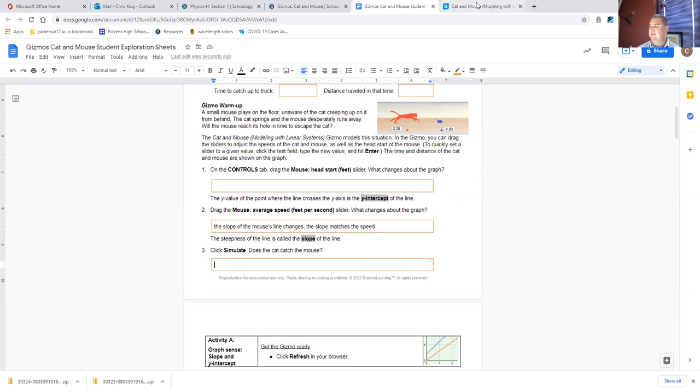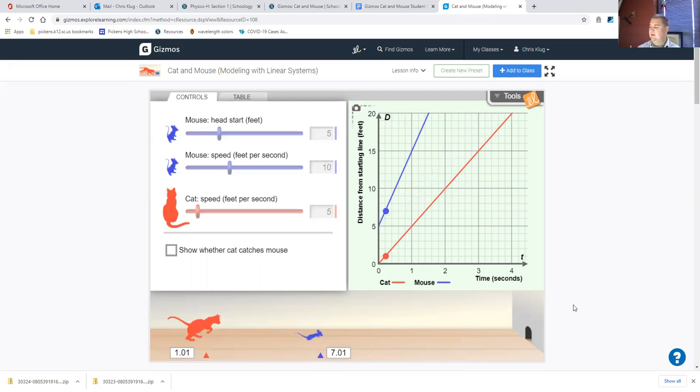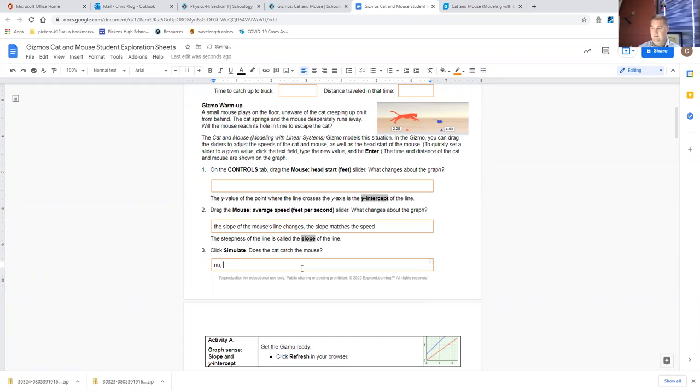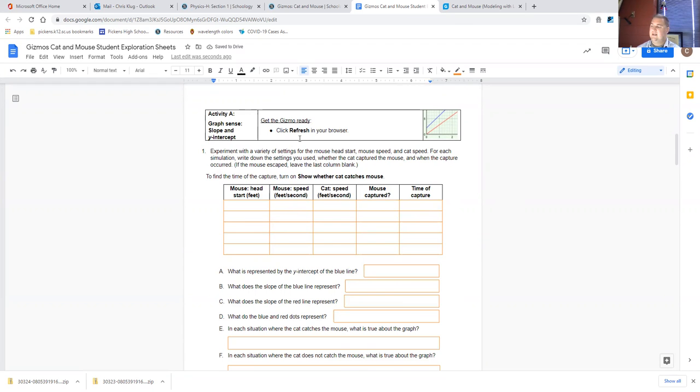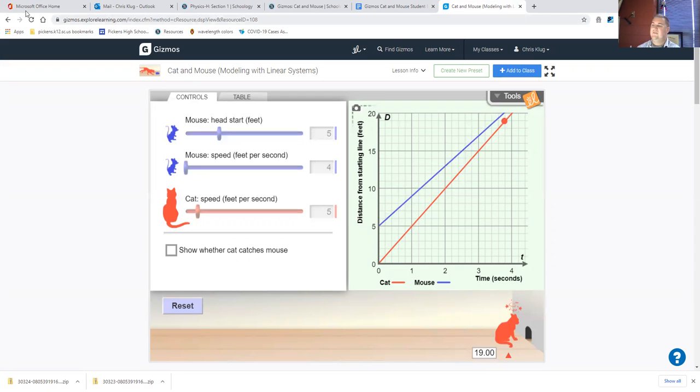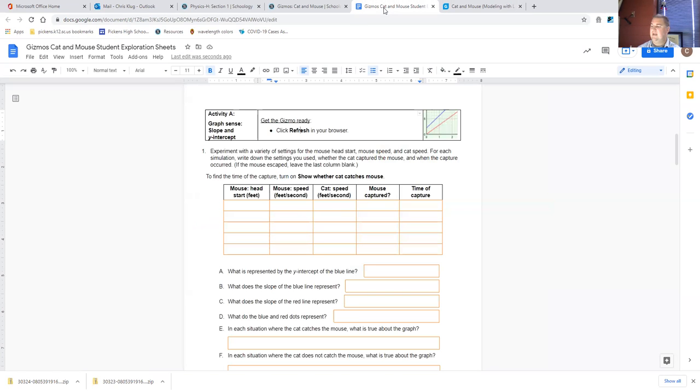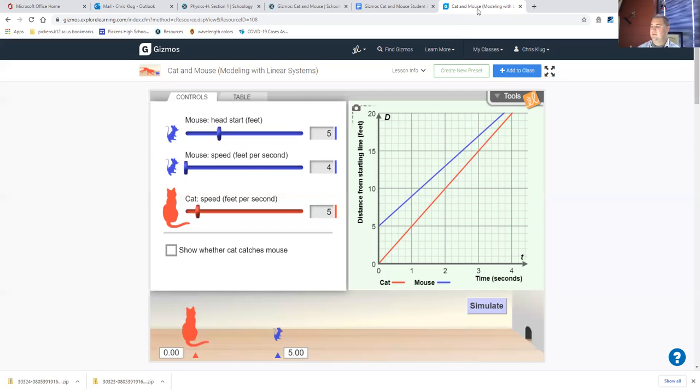Click simulate. Does the cat catch the mouse? What do you notice about the blue and the red line? Do they ever cross? They don't. And the mouse is running faster than the cat in that case. Even if we reset it to the original situation, this was the original situation. Did the cat catch the mouse? No. Notice that I clicked refresh in my browser as well. If you've changed settings, you want to make sure that you click refresh so that you have the original settings for the mouse and the cat.